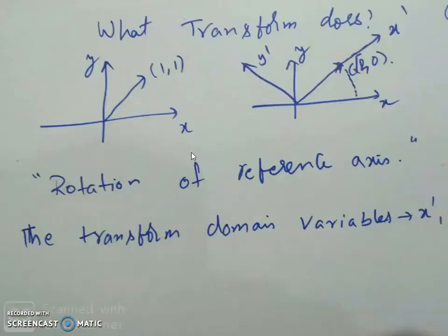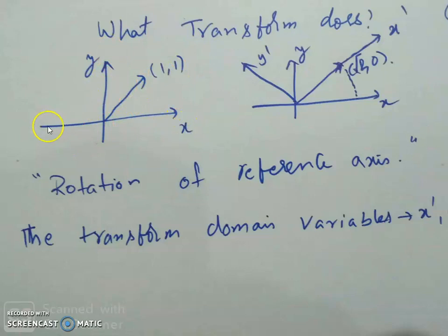With that, let us move to the transform itself. What does a transform do? A transform is simply another perspective of the same signal. It means the reference axes are going to change. Let us see an example: there is a vector (1, 1) in a Cartesian coordinate system with x-axis and y-axis, and the point is (1, 1).